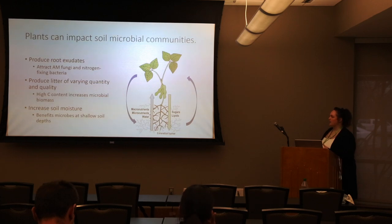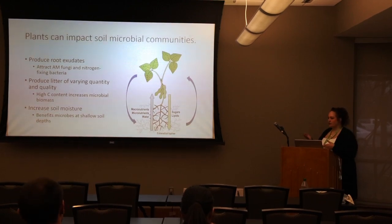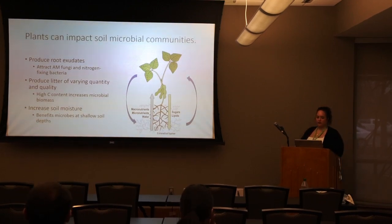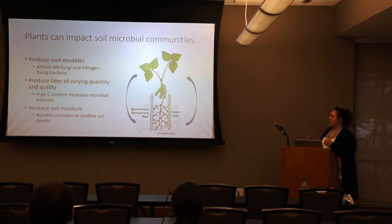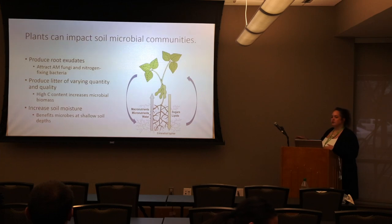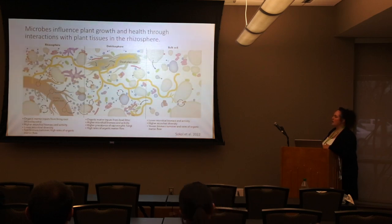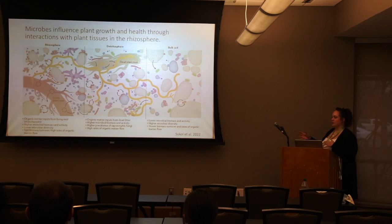The makeup of plant litter is going to have an impact on our microbial communities. Litter high in carbon can increase microbial biomass, and litter high in nitrogen can help add nitrogen back into our systems. Plants can also increase soil moisture, which is particularly beneficial for microbes that occupy shallower soil depths right by the surface, where sustaining sufficient moisture is really important.